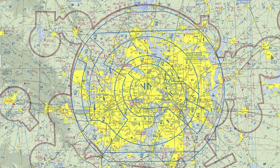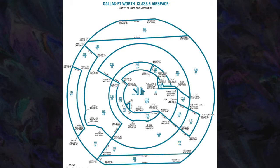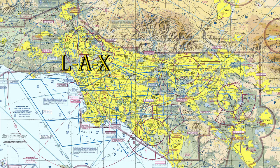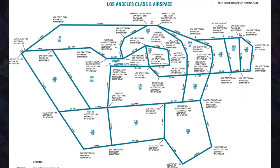The FAA also has Class Bravo airspace charts that declutter everything and just leave you with the airspace picture so you can get a better look at what it looks like. Now let's go ahead and take a look at LAX, Los Angeles International Airport. This is probably one of the most confusing airports just because there's so much on the chart — so many colors and airspaces.